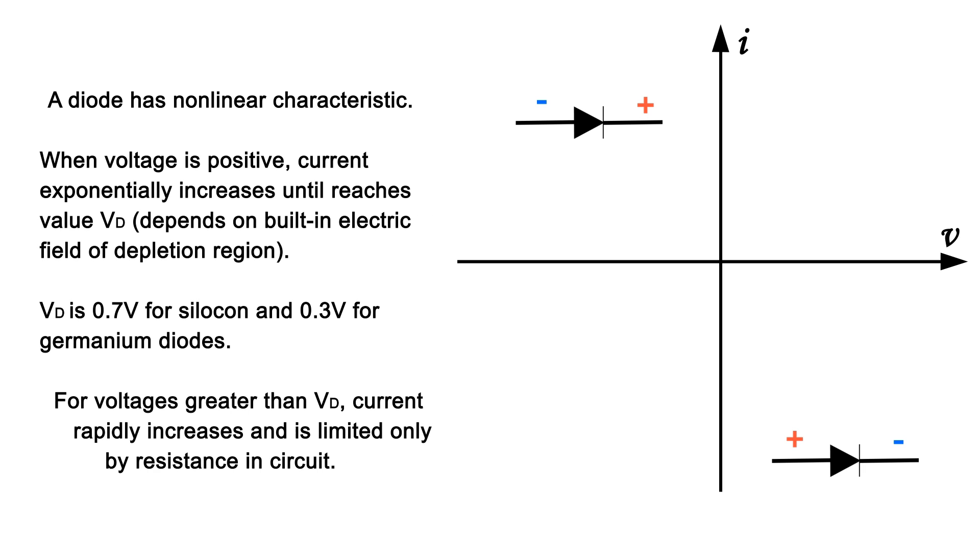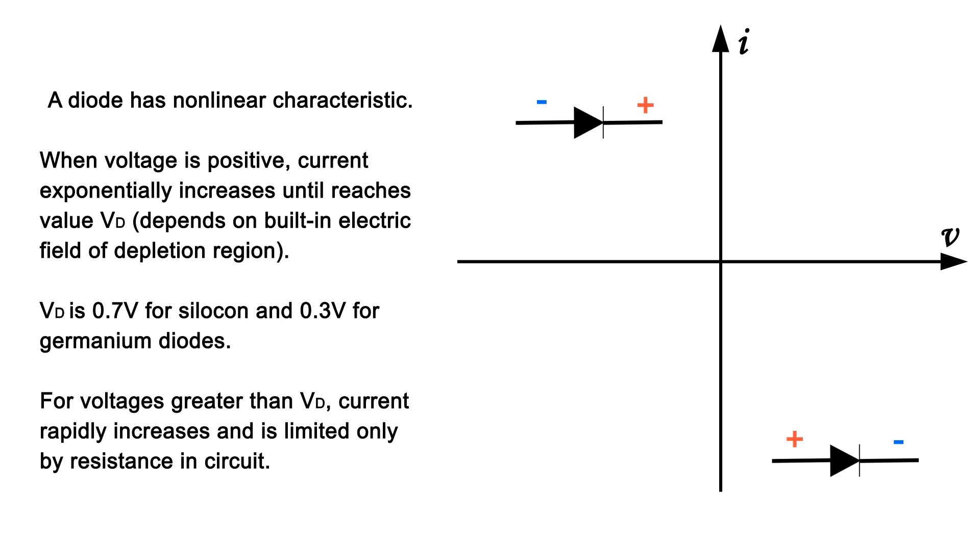Until it reaches value Vd, which depends on the built-in electric field of the depletion region. Vd is 0.7 volts for silicon and 0.3 volts for germanium diodes.